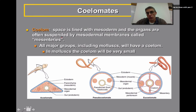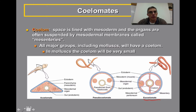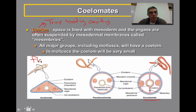Before we get started with our discussion on mollusks, we need to establish that we are now talking about a group of animals that are considered coelamates, or sometimes they're called eucoelamates. What that means is that these animals actually have what we consider a true body cavity. Back in Chapter 14, we had discussed the flatworms, like the planarian you see right here — they were considered acoelamates, meaning without a body cavity.